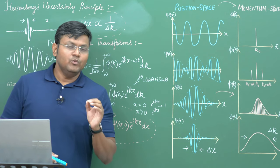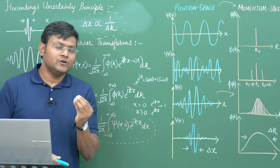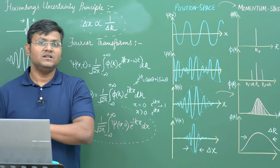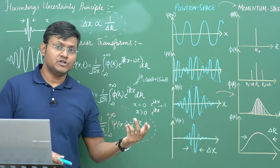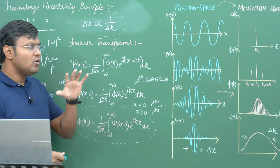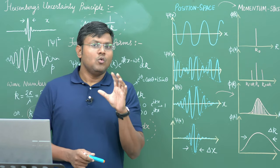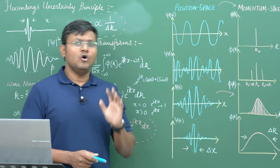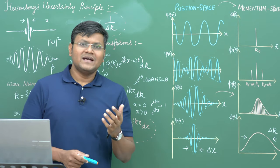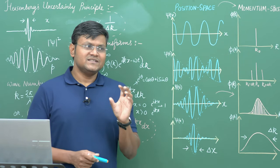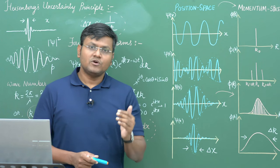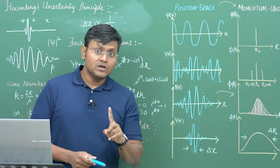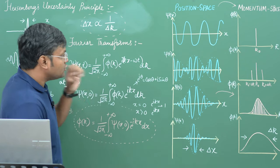The more accurately we can measure the position of a particle, the less accurately we can measure the momentum, and vice versa. This simply gives you a qualitative idea. I also want to give you a quantifiable mathematical expression, and for that let me take the example of a Gaussian function. A Gaussian function is also known as a minimum uncertainty wave packet because it corresponds to the minimum uncertainty relation. Let me obtain the actual Heisenberg uncertainty equation for the case of a Gaussian wave packet.